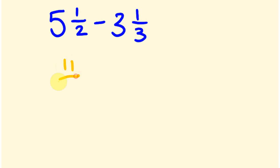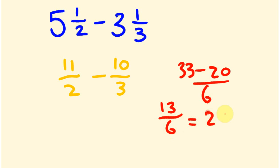So this is 11 over two, take away 10 over three. And if we then work this out, we're going to get the bottom number six, 33. 33 take away 20 is 13 over six, which is going to equal two and one sixth.